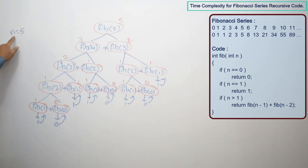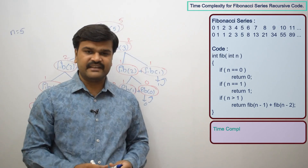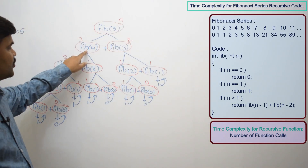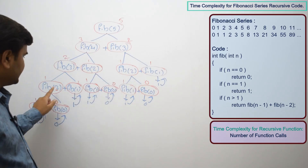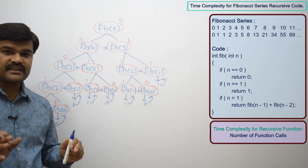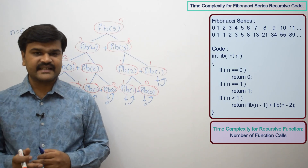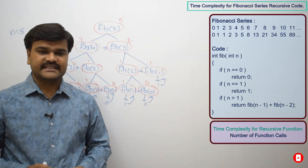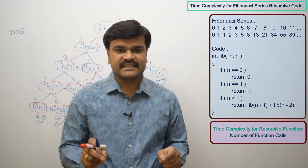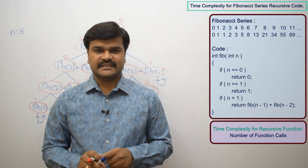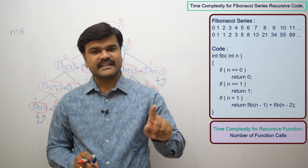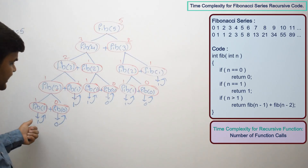When finding the 5th Fibonacci number, this is the recursive tree. The time complexity for a recursive function is the number of function calls. Counting here: 1, 2, 3, 4, 5, 6, 7, 8, 9, 10, 11, 12, 13, 14, 15 — total 15 function calls. But we have to generalize this in terms of n. We have to find the time complexity in terms of n, and time complexity is always an approximate value.